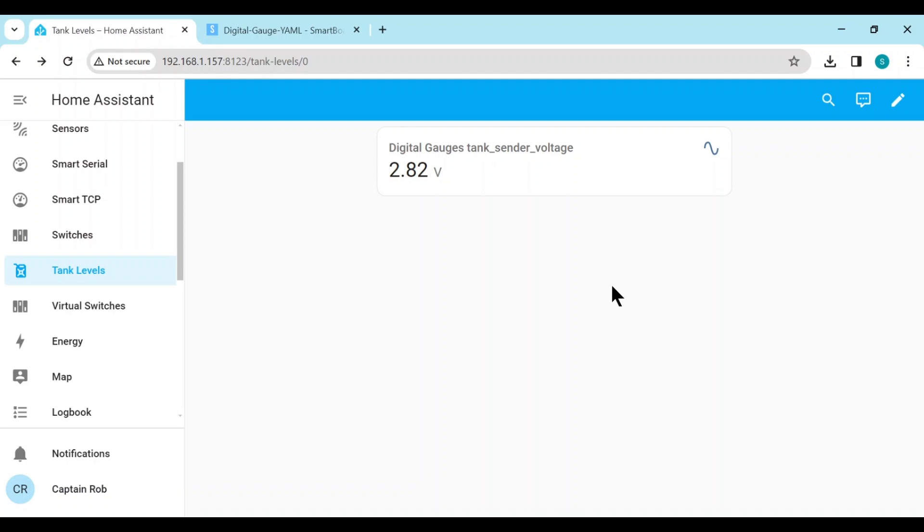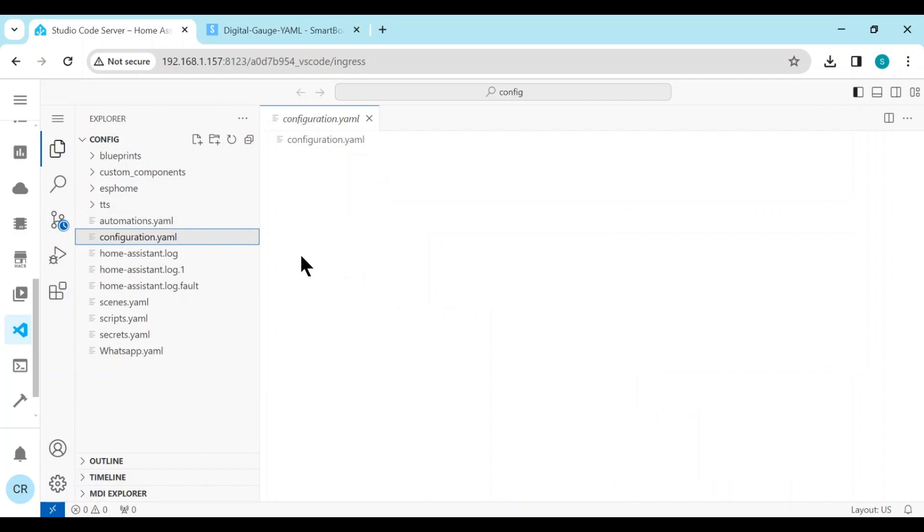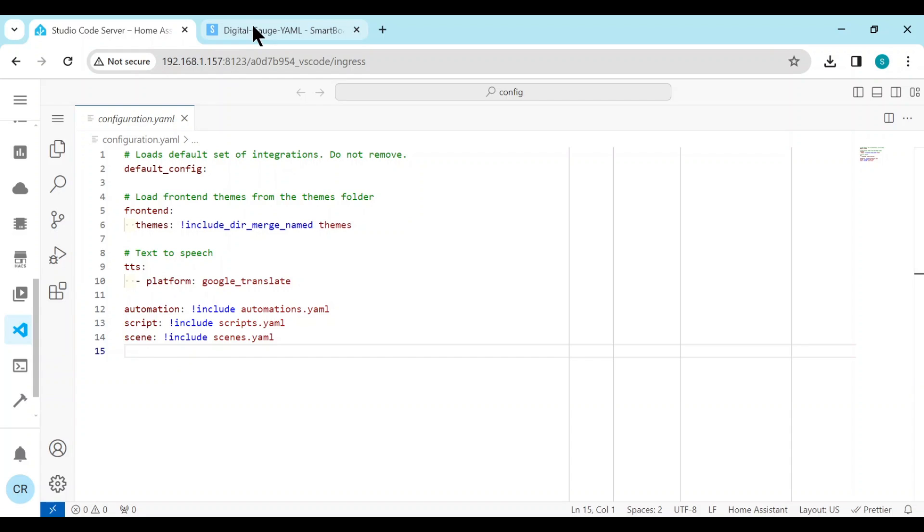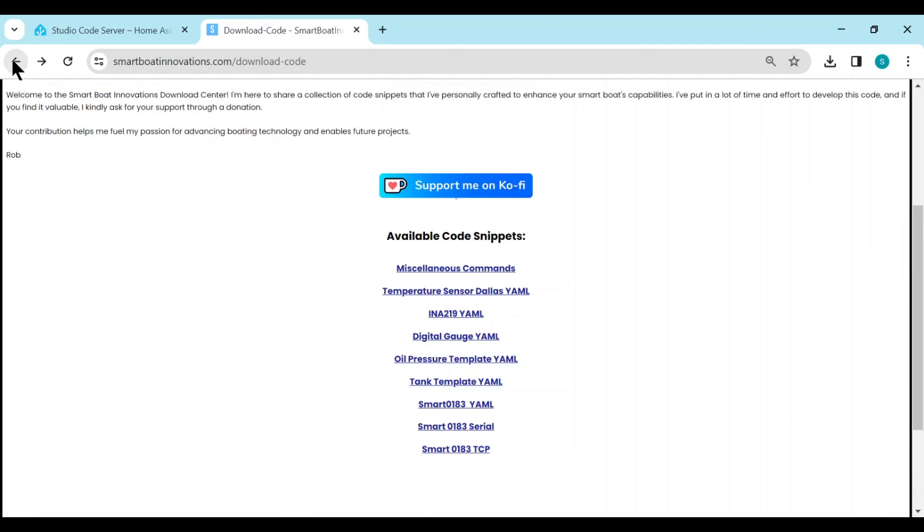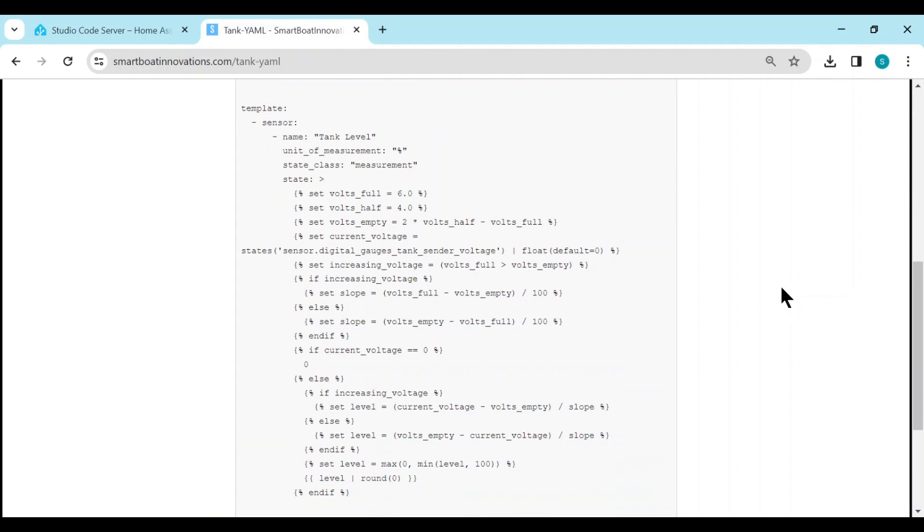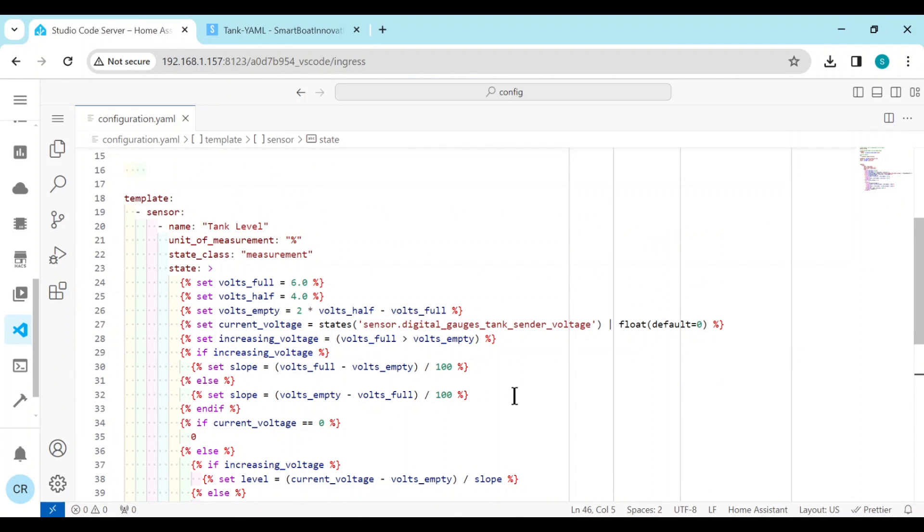So I'll turn on the engine electrics. It's now reading a voltage at the center of 2.8 volts. Now we need to make a correlation between voltage and the percentage full. I've written some code which we have to put in our configuration.yaml. We use a studio code server to do that configuration.yaml. And again, if you go to my website and you scroll down, there's a tank template.yaml. It's quite a large thing. I've made it quite generalized. Let's copy this in.